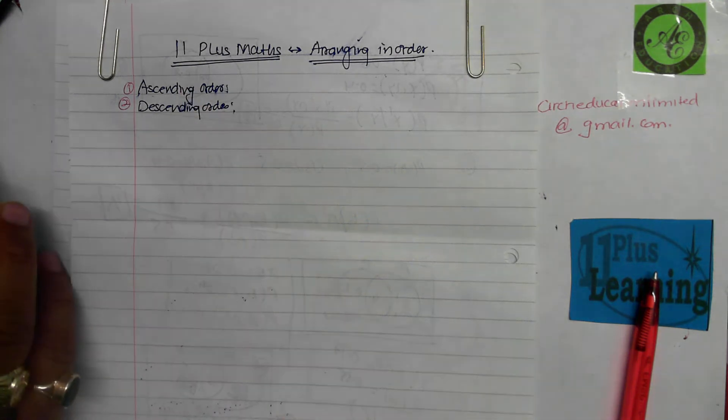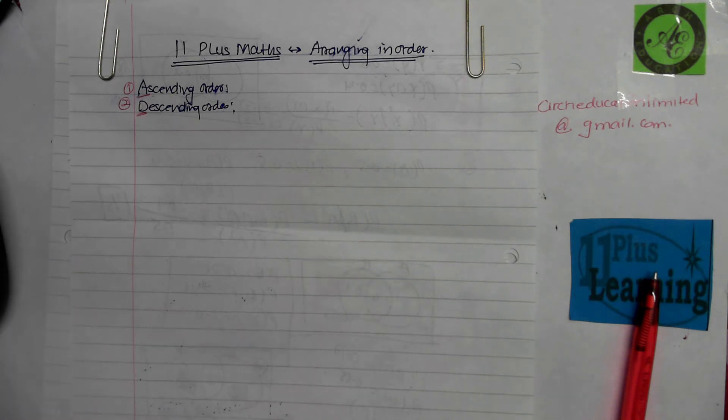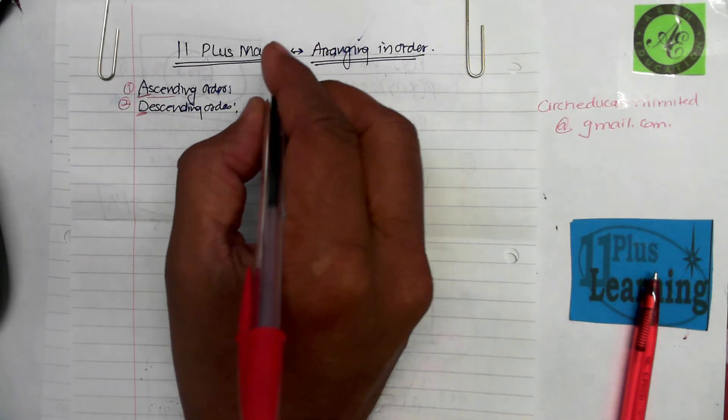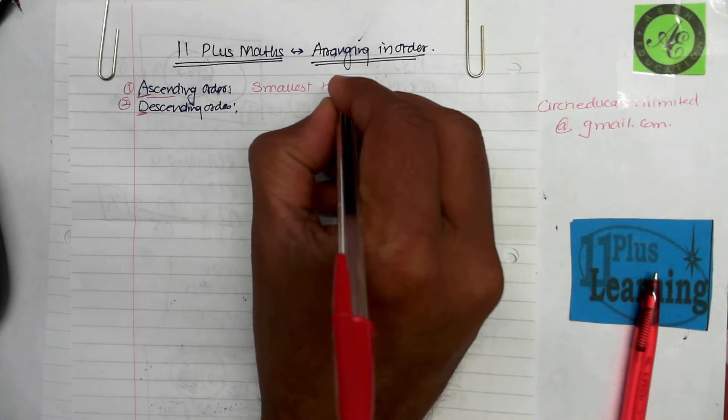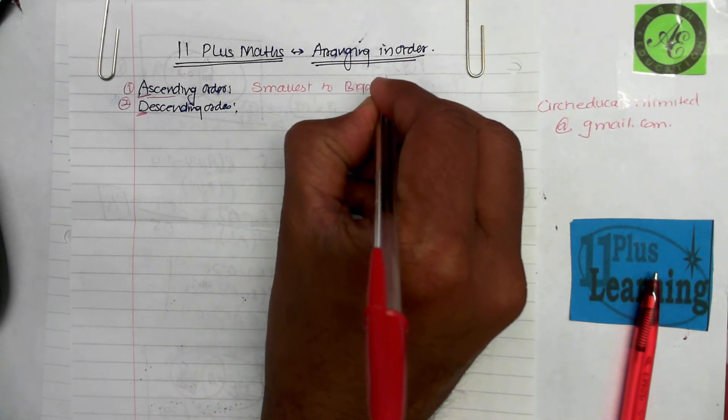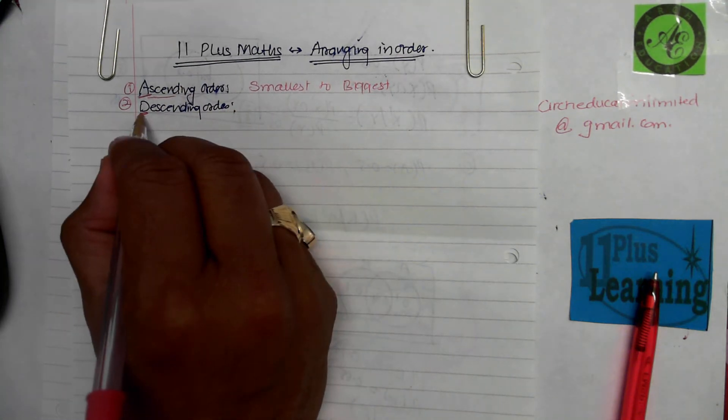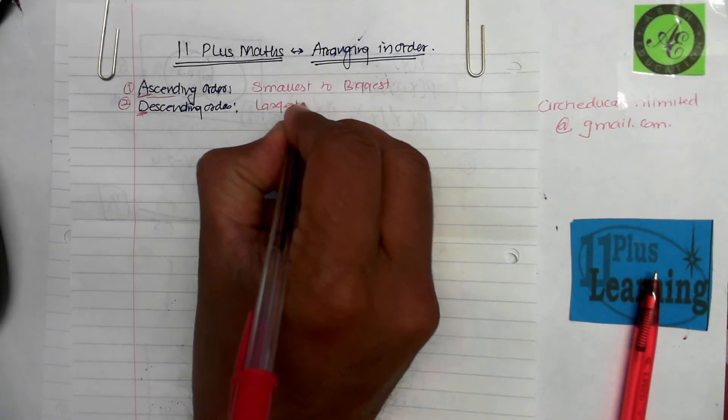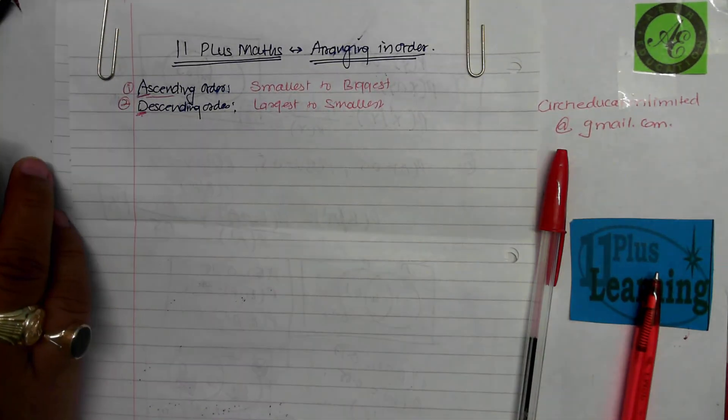If you know what ascending and descending order is, I would like you to write it down in your book and we will compare the answer with me in a second. Ascending is ascend, as in going up, so this is smallest to the biggest. Descending, you can compare this with going down. D for down, D for descending. This is the largest or biggest to the smallest.